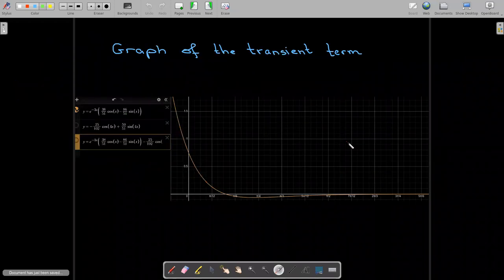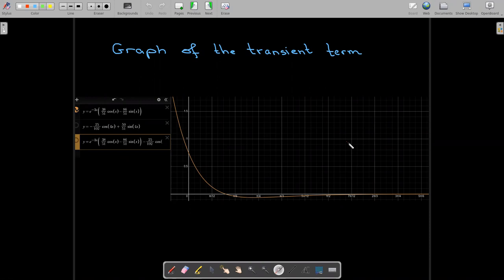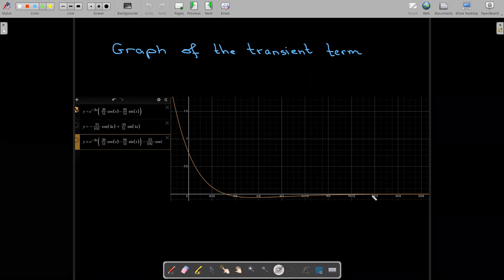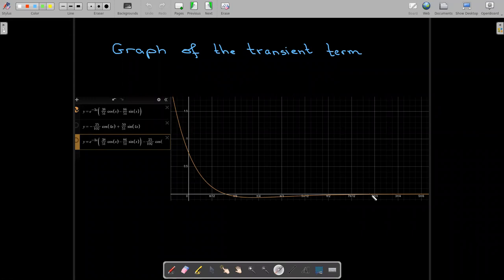And so why don't we take a look at the graph of these terms. So right now, all we're looking at is the transient term. And you can see that this is just the transient term. But even when t reaches by π over 2, certainly by 2π over 3, the transient term is essentially zero. It's not making any contribution.